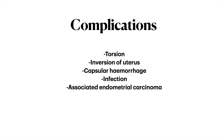The complications of uterine fibroids include torsion, inversion of uterus, capsular hemorrhage, infection, and associated endometrial carcinoma.